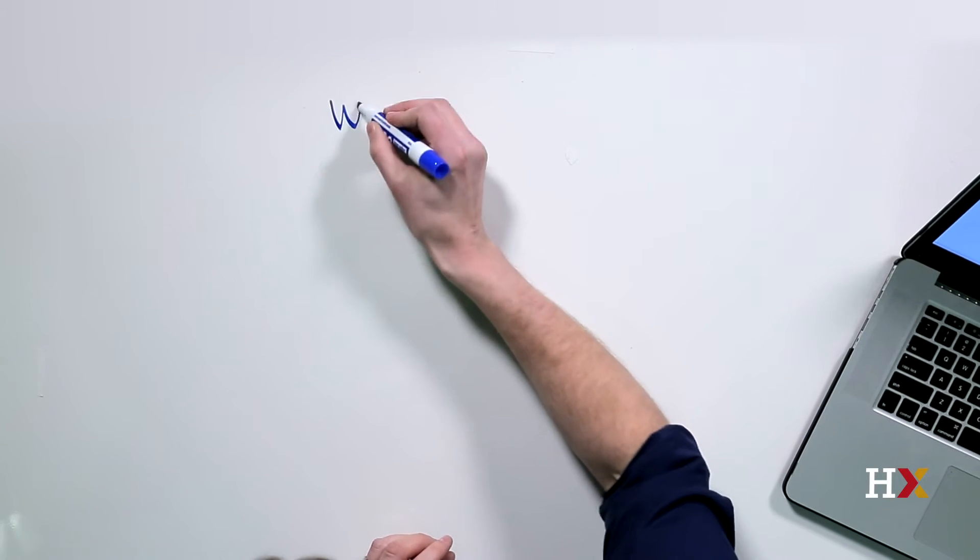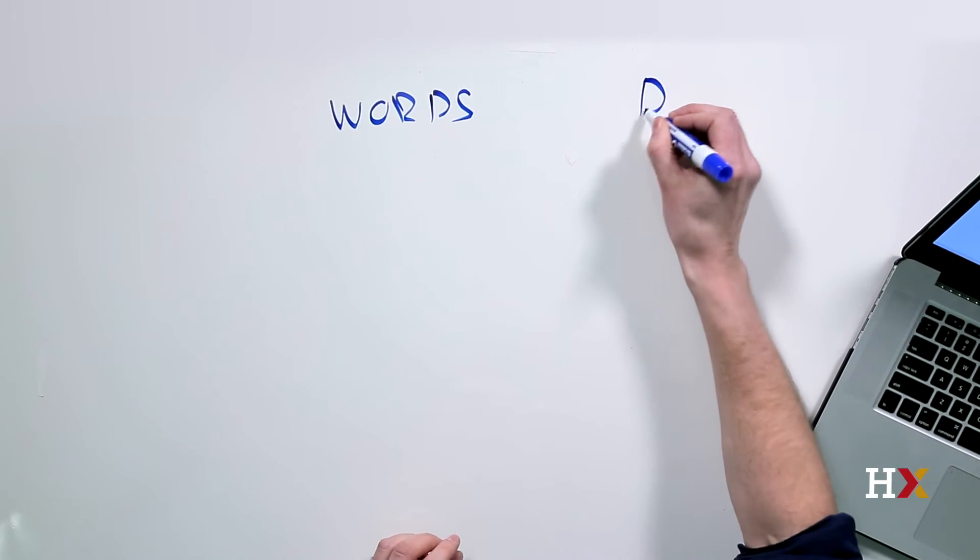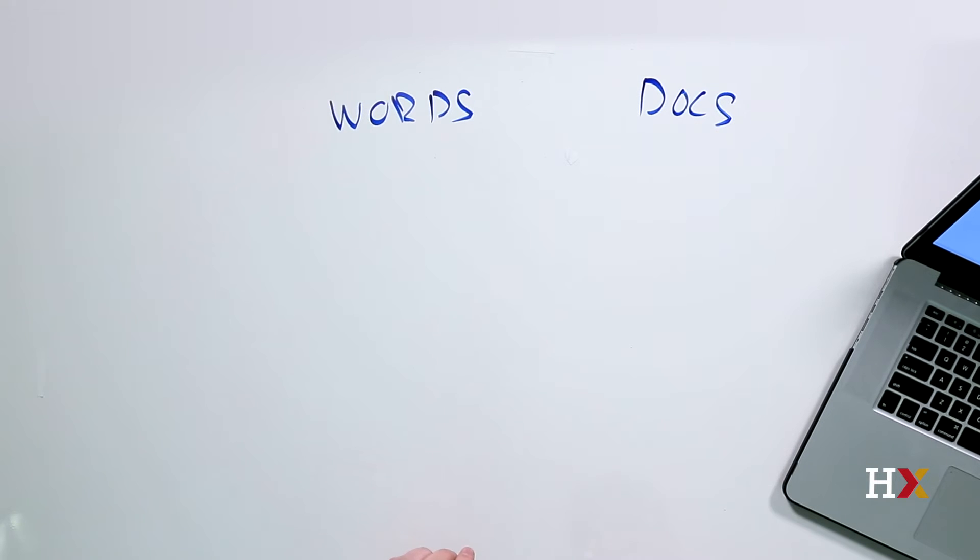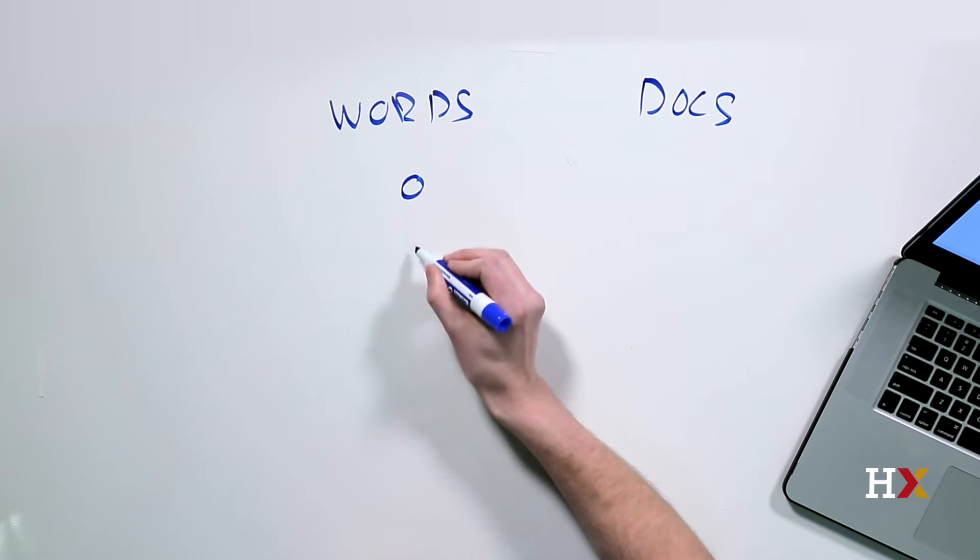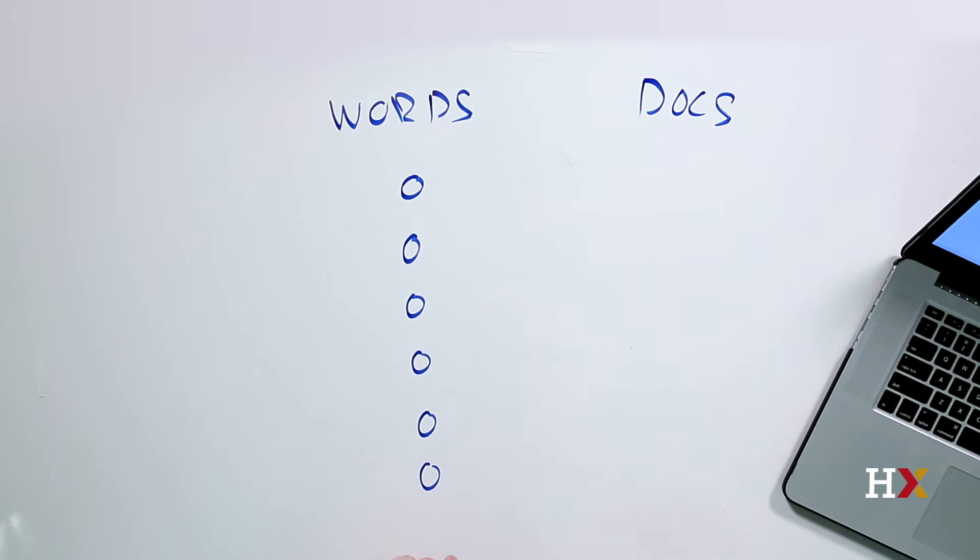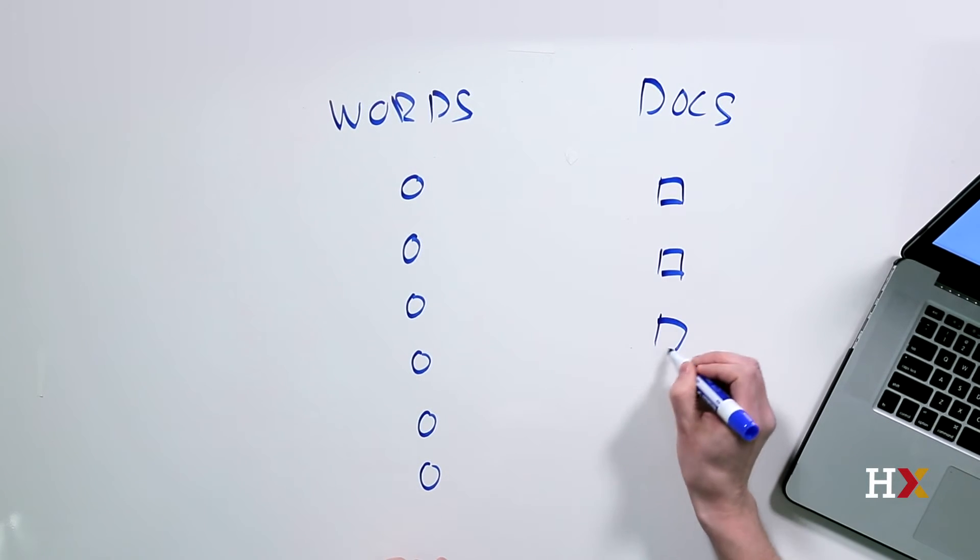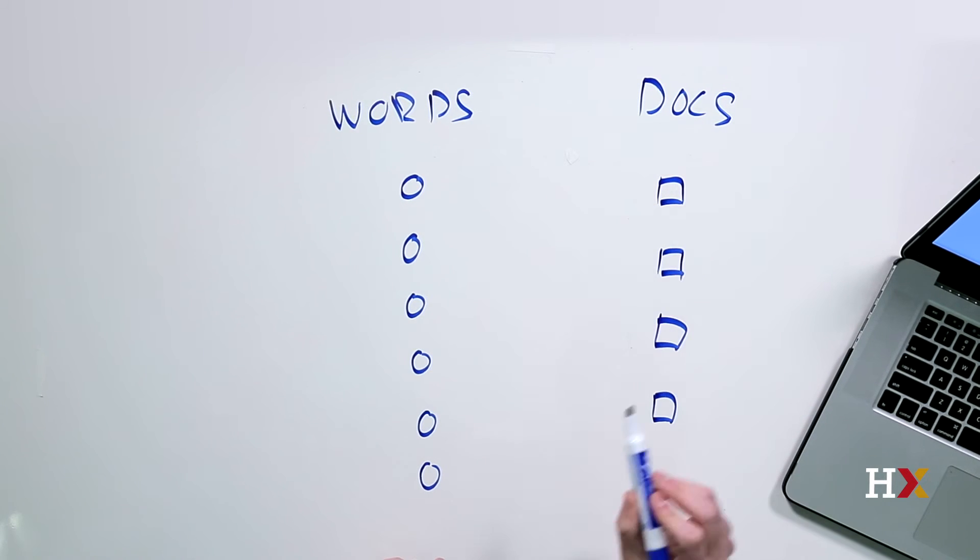Let's draw this. Words on the left, we have documents on the right. Here different circles correspond to different words and we have our documents. I'm going to use squares for them, and we have lines connecting words to documents.